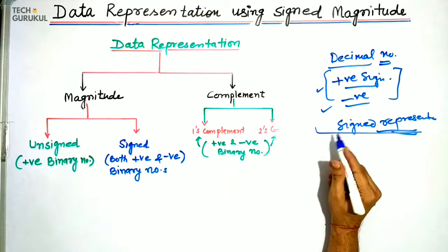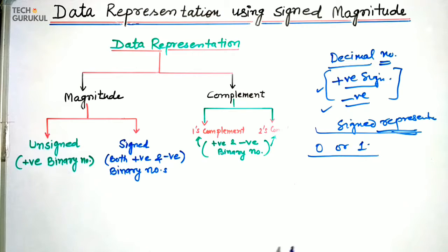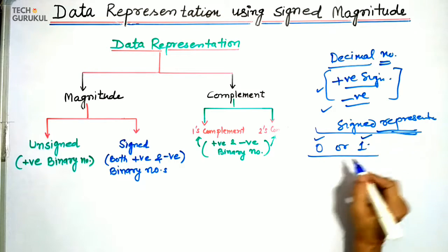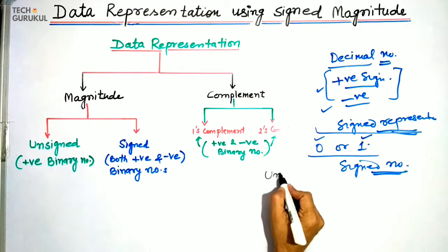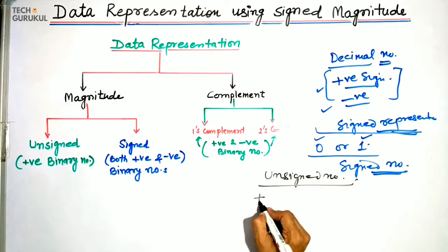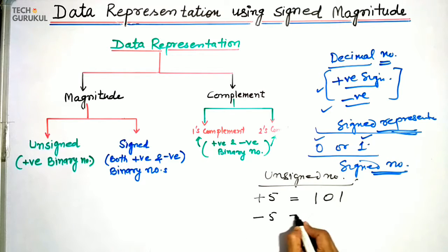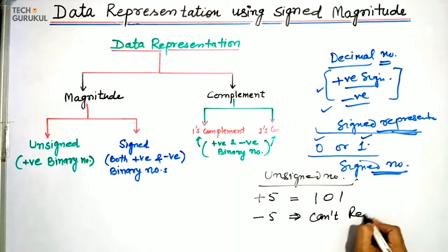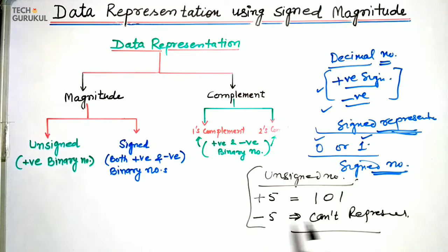We know that digital circuits understand only two symbols: 0 or 1. So we must use these same symbols to indicate signed numbers. If we want to represent unsigned numbers, for example plus 5, the binary equivalent is 101. But minus 5 — we can't represent it in unsigned numbers. So in unsigned numbers only positive numbers are represented.